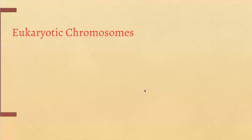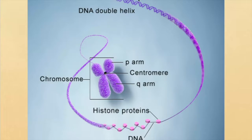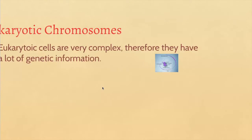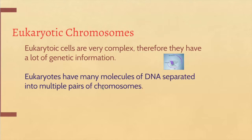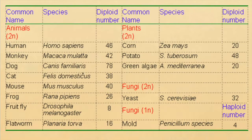Let's look at eukaryotic chromosomes, which is what we spend most of our time focusing on in this class. Eukaryotes are a lot more complex — they have a lot more DNA and more genetic information, since there are more parts to those cells. These are packaged into chromosomes, which usually take an X shape once they've been duplicated. Eukaryotes tend to have many molecules of DNA separated into multiple pairs of chromosomes. Depending on the organism, you have a different number: humans have 46, monkeys have 42, dogs have 78, cats have 38. These refer to how the DNA is organized into different groups in these chromosomes.